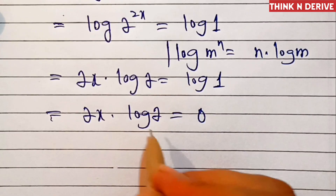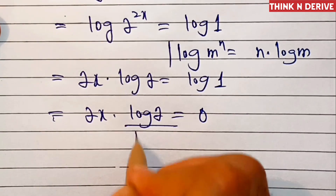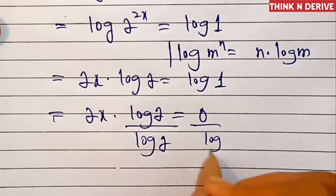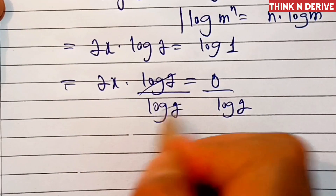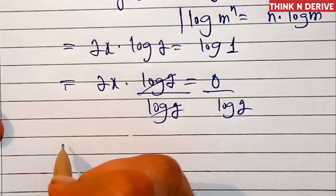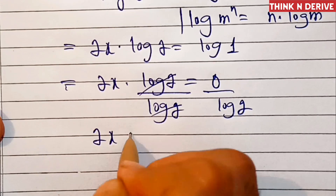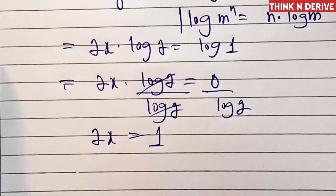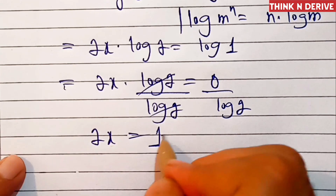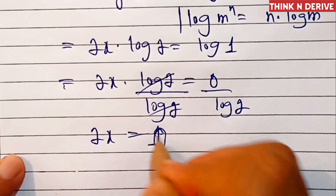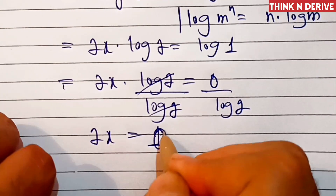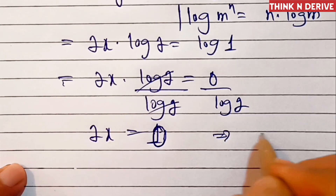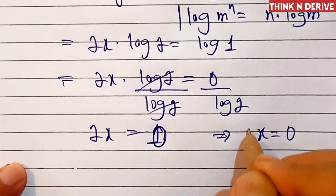This is equal to 2x into log 2 equal to 0, because log 1 is equal to 0. Now we'll divide both sides by log 2. So this means 2x equal to 0 divided by log 2, which is equal to 0. This implies that x is equal to 0, and this is the value of x.